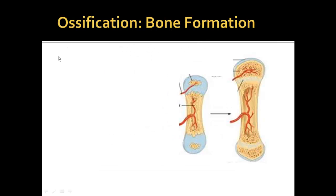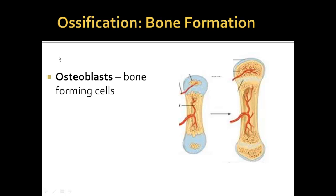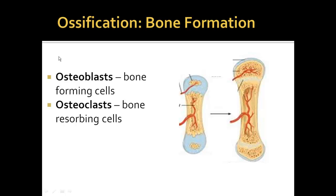To understand ossification, I want to introduce a few players. The first player is an osteoblast, which is a bone-forming cell, and an osteoclast, which is a bone-destroying cell. These two work in tandem to slowly convert cartilage over to bone.